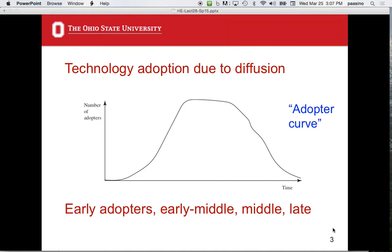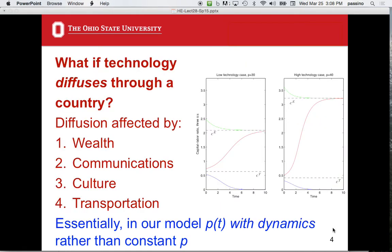As technology spreads, in a more general context, the book by Rogers is about the diffusion of innovations. So it's not just technologies necessarily, it's just innovations in general. But we're going to study the technology case and notions of an adopter curve like that. Of course, this diffusion is affected by wealth. If people can't buy, phones are not going to spread.